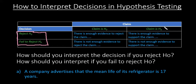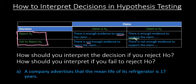If you reject the null hypothesis and your claim is about the null hypothesis, then you will say there is enough evidence to reject the claim. When the claim is about the null hypothesis you always use the word 'reject.' If you fail to reject the null hypothesis, then you will say there is not enough evidence to reject. If your claim is about the alternative, you say there is enough evidence to support — you use the word 'support' instead of 'reject.' And if the claim is about the alternative hypothesis and you fail to reject the null, there is not enough evidence to support the claim. Anytime you fail to reject, you use the word 'not.' Anytime your claim is about the null, you use the word 'reject,' and anytime the claim is about the alternative, you use the word 'support.'